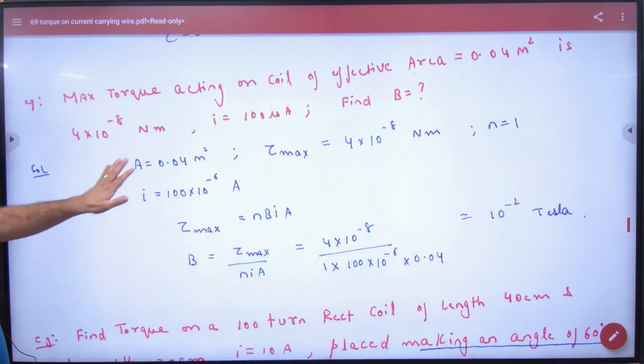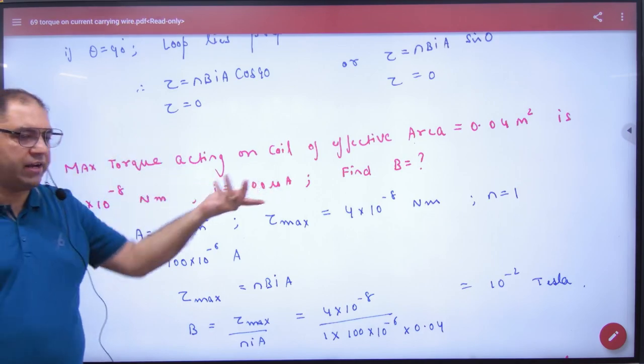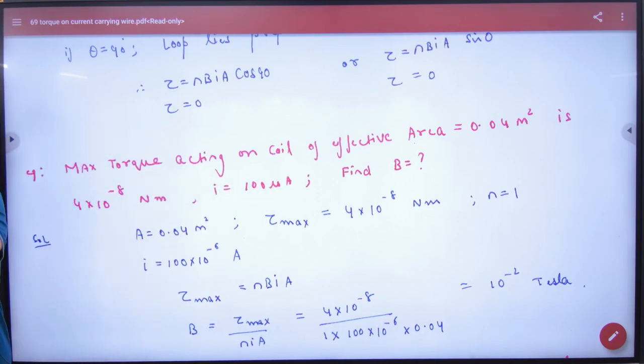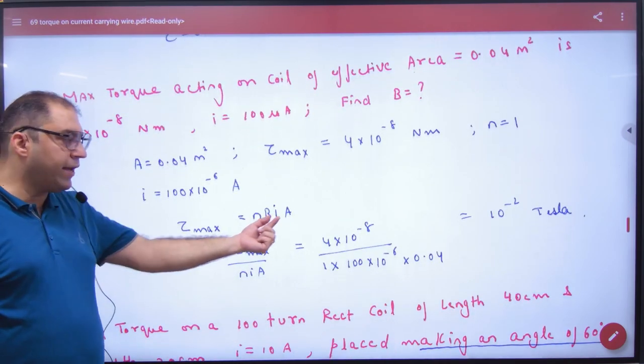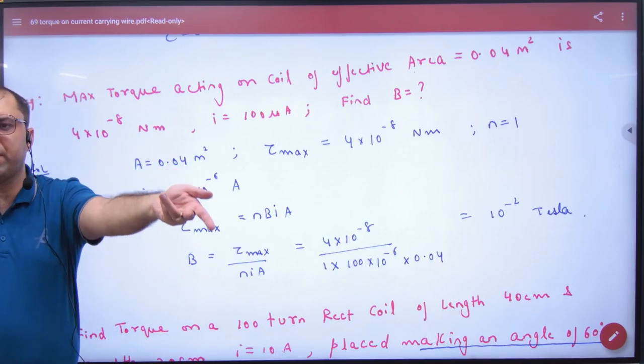So maximum torque is given in question. I have not mentioned number of turns, so I have taken the number of turns. Now how much is maximum torque? N, B, I, A. If cos or sin, maximum value is one.